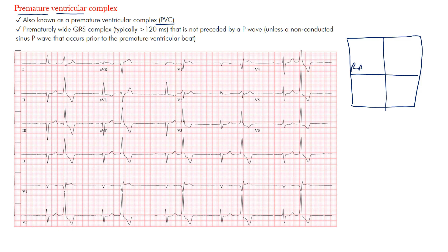If you imagine our heart using this box diagram — right atrium, left atrium, right ventricle, and left ventricle — and review our conduction system: the sinus node up in the right atrium near the superior vena cava, the internodal pathways, the AV node, Bachmann's bundle to the left atrium, the His bundle, right and left bundle branches with left anterior and posterior fascicles, and ventricular Purkinje fibers. That's the normal conduction system — impulse starts at the sinus node, goes to the AV node, and down to the ventricles.